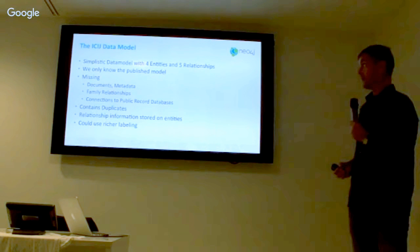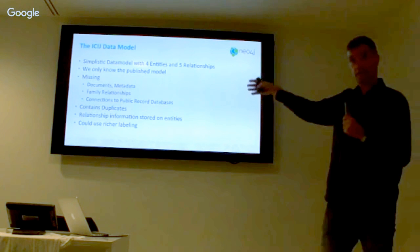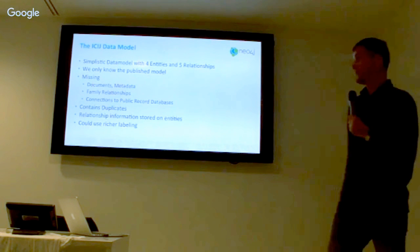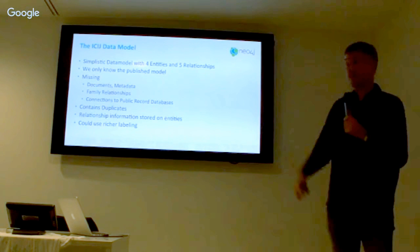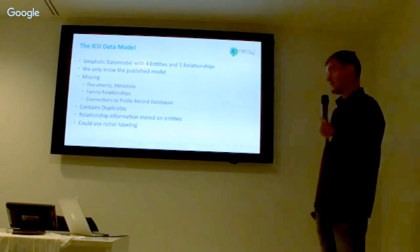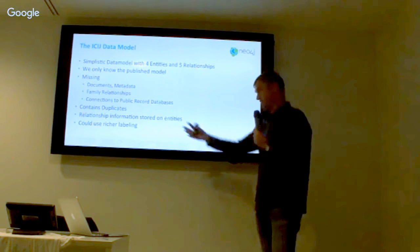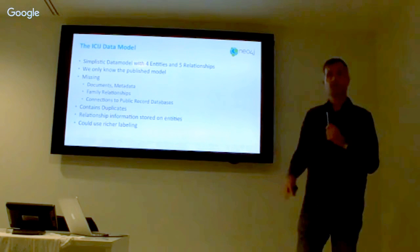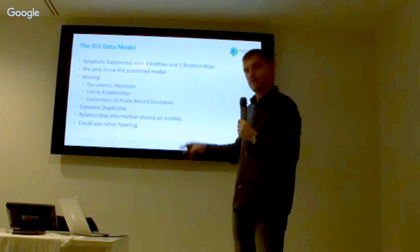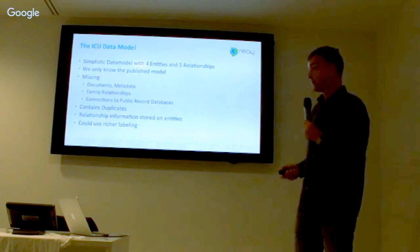This is a super simplistic data model. We only know the published model — it contains missing things like documents and metadata that we don't have access to and you won't see in the presentation. It contains duplicates, and relationship information is stored on entities. It could be improved, but in the end it works and gives you a good impression of what it is about.